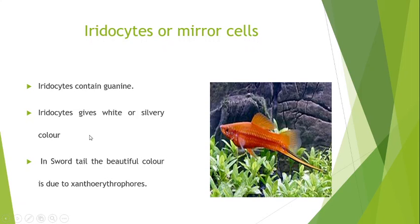We can say that the chromatophores and iridocytes are present in the integument above and below the scales and their number varies in different species and different parts of the body of the same species. Usually chromatophores are larger on the dorsal side of fish while the iridocytes are more numerous on the ventral side. The relative number of chromatophores, kinds of pigments present in them, and the manner of their distribution on the body results in a variety of color patterns.